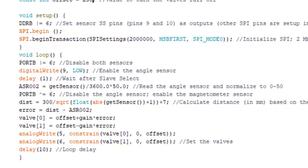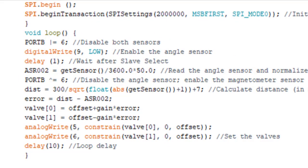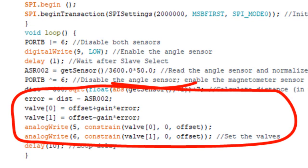We're using a simple proportional control. The signal to the valves is proportional to the error.